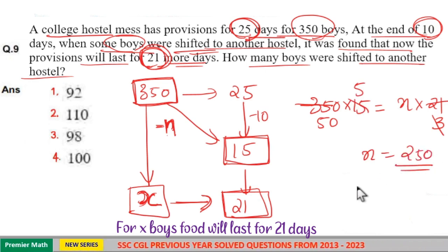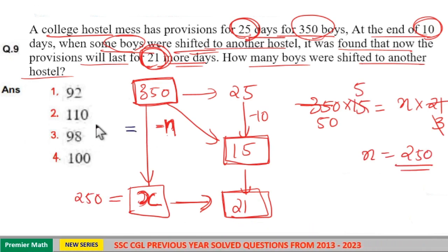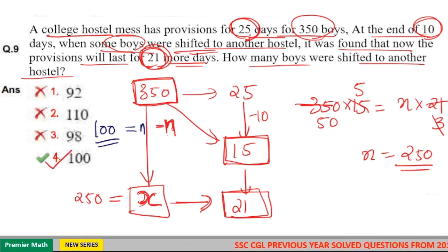Which means remaining boys is 250, so number of boys leaving is equal to 100. n is equal to 100. So option 4 is your answer.